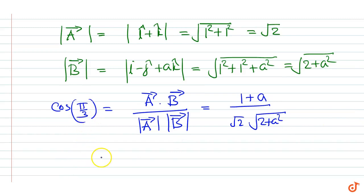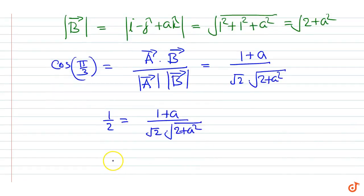Cos π by 3 is nothing but half, so half equals 1 plus a over root 2 plus a squared, or we can write...